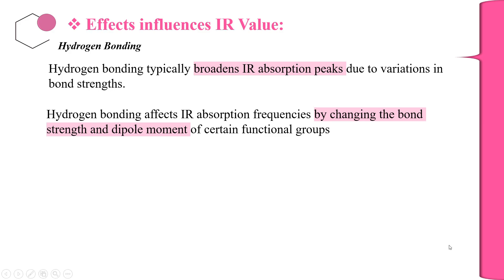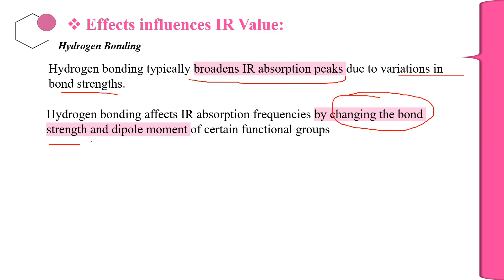How does hydrogen bonding actually affect the IR value? Hydrogen bonding typically broadens the IR absorption peak due to the variation in bond strength. Hydrogen bonding affects IR absorption frequencies by changing the bond strength and the dipole moment of certain functional groups — for example, the H₂O molecule.